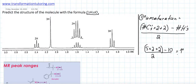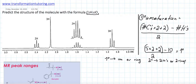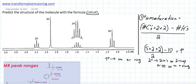One degree of unsaturation means either a double bond or a ring. Two degrees would mean two double bonds, two rings, a triple bond, or a double bond and a ring. We have 1, so we have either a double bond or a ring. Note that oxygen is not counted in degrees of unsaturation. Since we have oxygen and 1 degree of unsaturation, there's a good chance we have a C=O double bond.